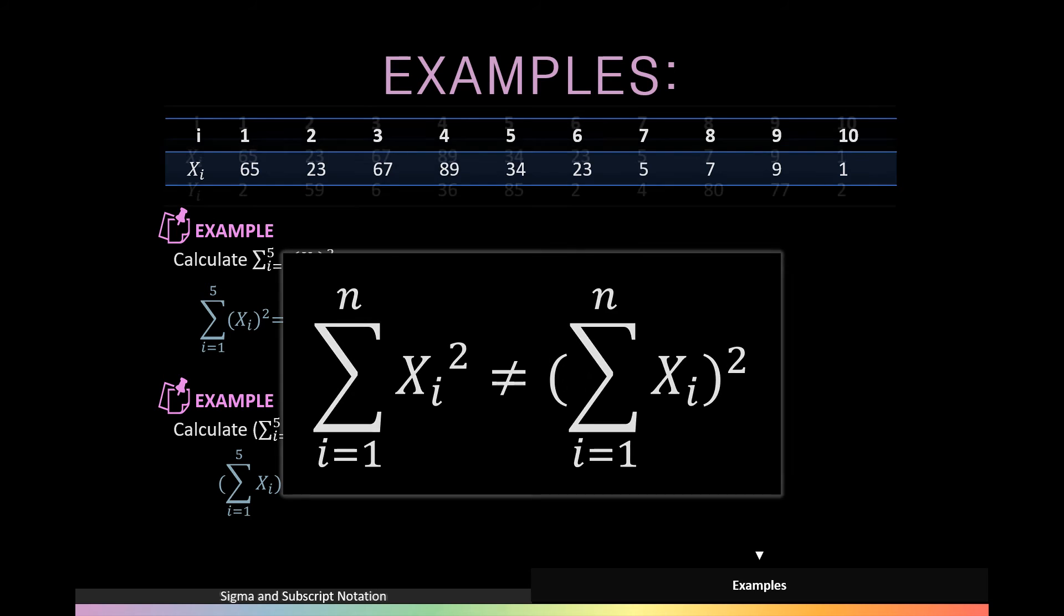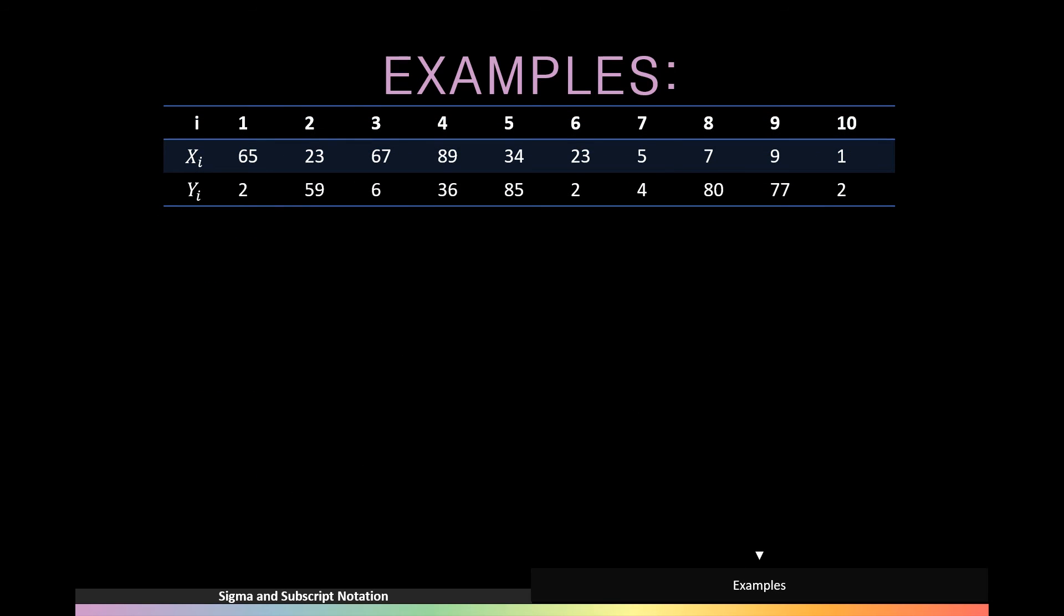Next we're going to look at two sets of values. The first example is to calculate the summation of Xi multiplied by Yi from i equal to 1 to 4. We would do this by individually multiplying Xi from i and Yi and summing those results to get an answer of 5,093.